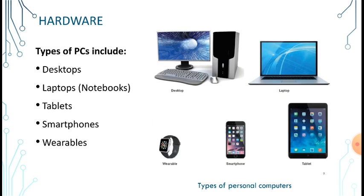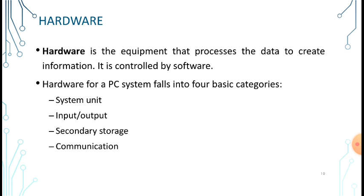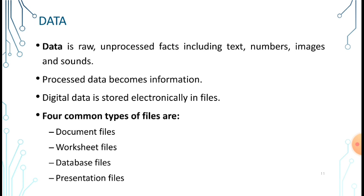We have several types of personal computers: the desktop, as you can see in the image, laptop or notebook, tablets, smartphones, and wearables. Hardware itself is the equipment that processes data to create information and is controlled by software. The hardware of a PC consists of four basic parts: the system unit, input/output devices, secondary storage, and communication.